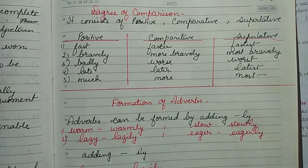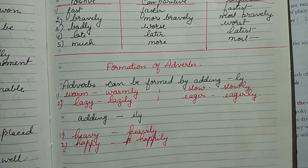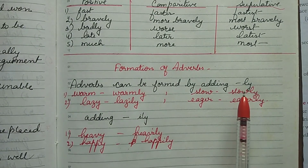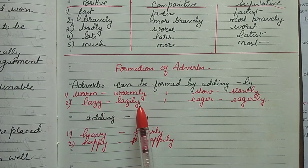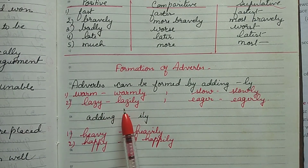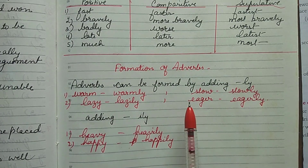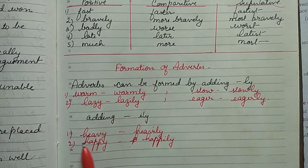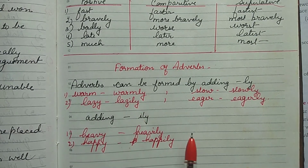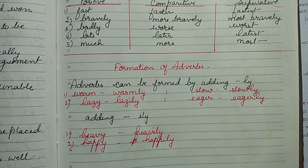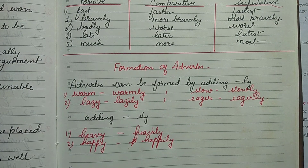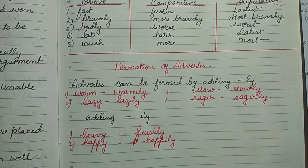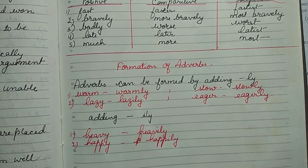Now, formation of adverbs: generally we add -ly to make a word into adverb form. For example: warm → warmly, slow → slowly, eager → eagerly. Sometimes we use -ily: lazy → lazily, heavy → heavily, happy → happily. Go through all the words and examples in your book and solve all the exercises. Thank you.